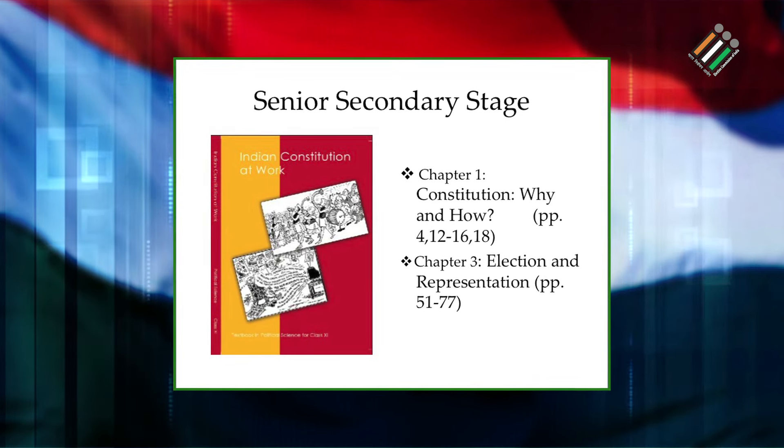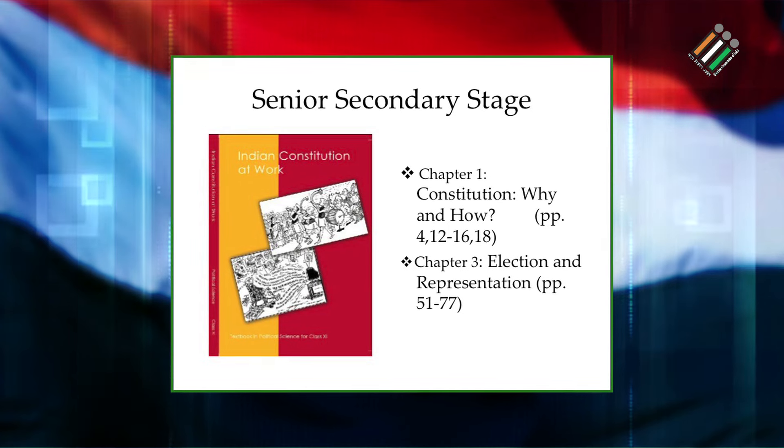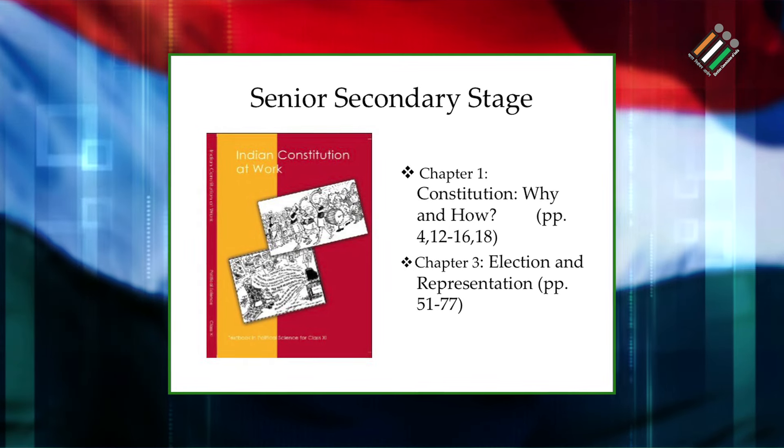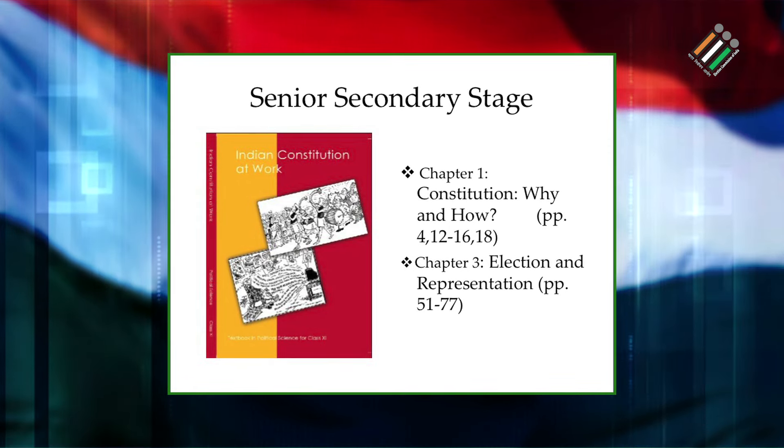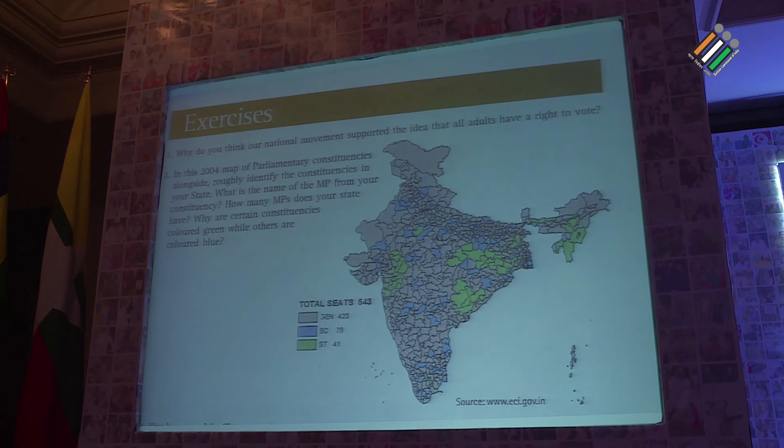At the senior secondary stage — Classes 11 and 12 — we talk about election and representation, various aspects of elections. In all these, our education includes a discourse on the functioning of the Election Commission of India, its challenges, and how it has evolved as one of the pioneer election management bodies in the world.